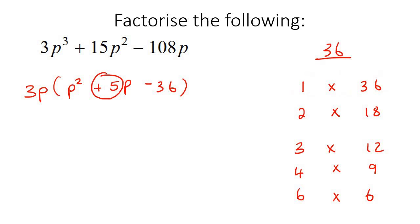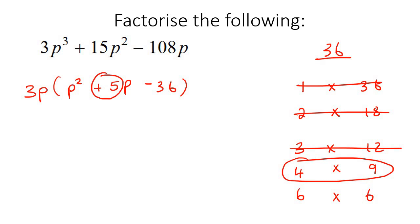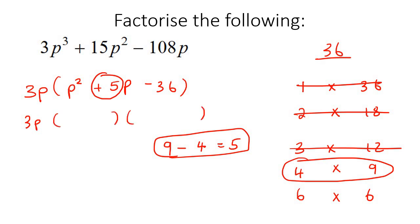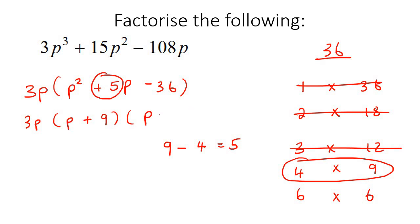If you took 1 and 36, you can never make a 5 — 36 minus 1 is 35, 36 plus 1 is 37. 18 plus 2 is 20, 18 minus 2 is 16. 3 plus 12 is 15, 12 minus 3 is 9. But if you look at 4 and 9 — 9 take away 4 gives you 5, and that is what we're looking for. So you make two brackets, and the 9 is positive and the 4 is negative: (p + 9)(p - 4). Then you just put the p and another p.